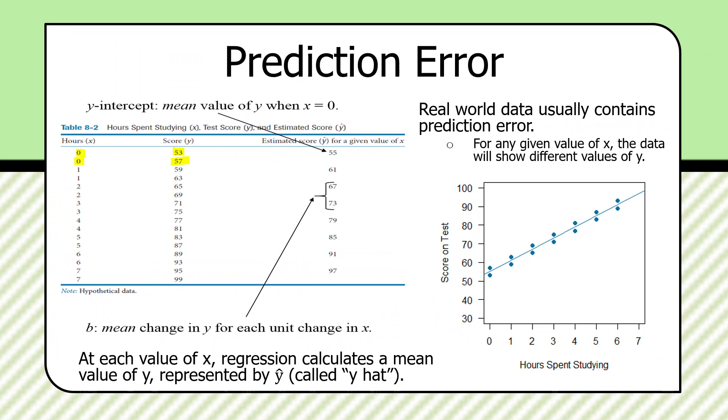Answer: regression calculates the mean. 53 plus 57 is 110 divided by two, since there are two students at this value of x. And that yields an estimate or a mean of 55.